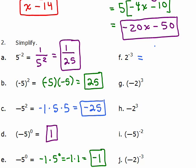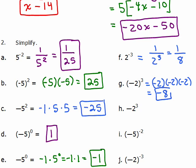For part f, 2 to the negative 3 means 1 over 2 to the positive 3, and 2 cubed is 2 times 2 times 2, or 8 — remember, it's not 2 times 3. For part g, we have negative 2 to the third power, so the base is negative 2: negative 2 times negative 2 times negative 2 is negative 8. For part h, the minus sign is not in parentheses, so that's negative 1 times 2 cubed, which is 2 times 2 times 2, giving negative 8.